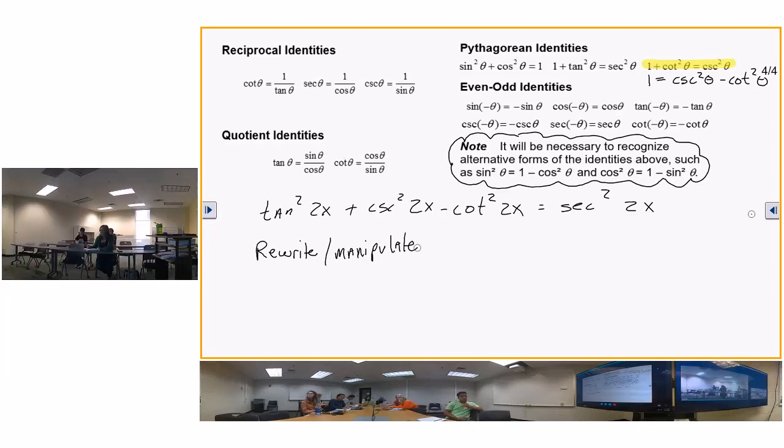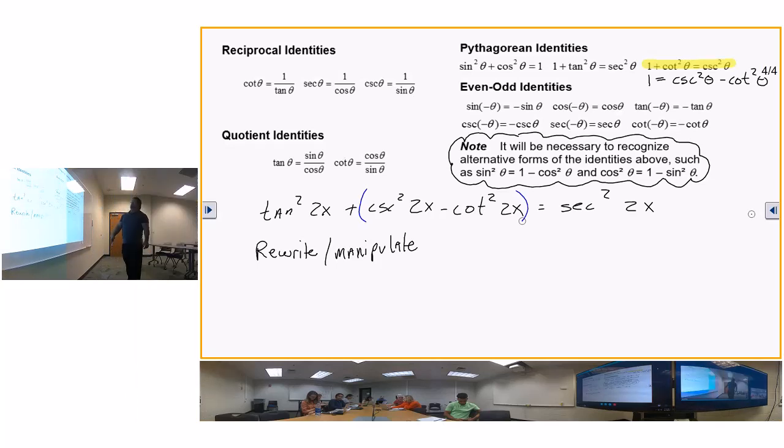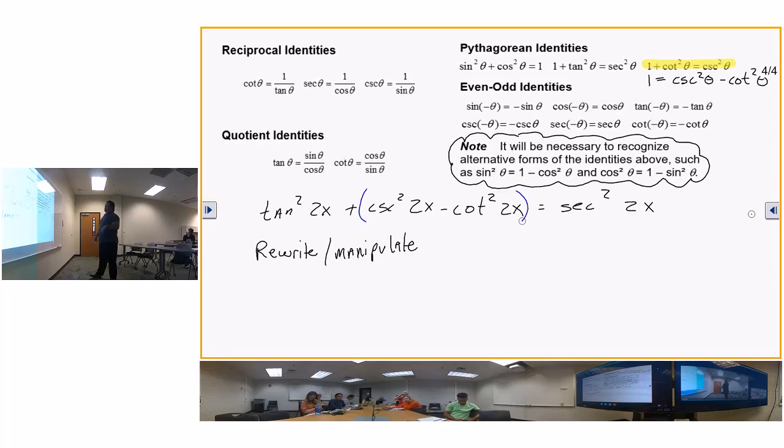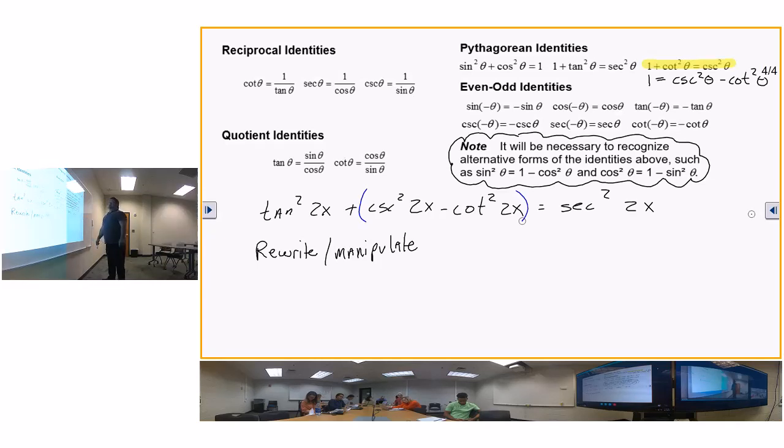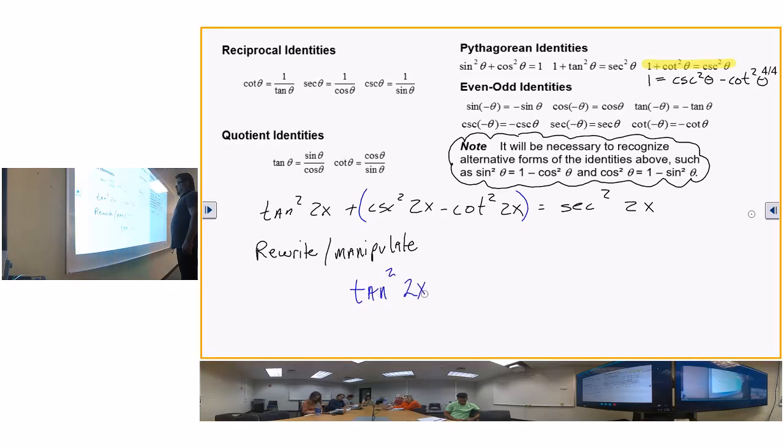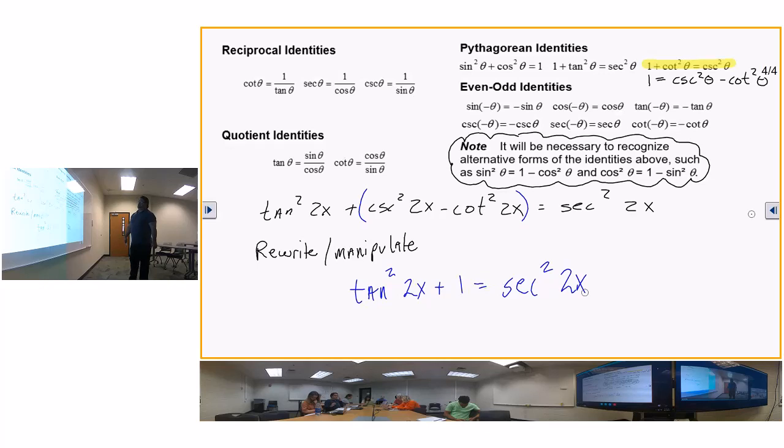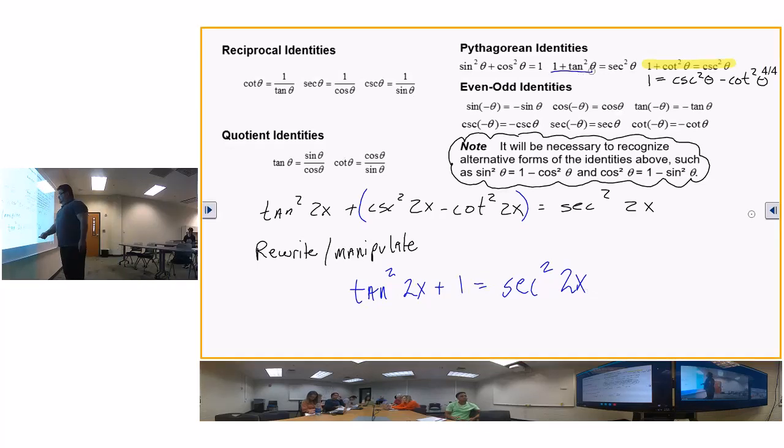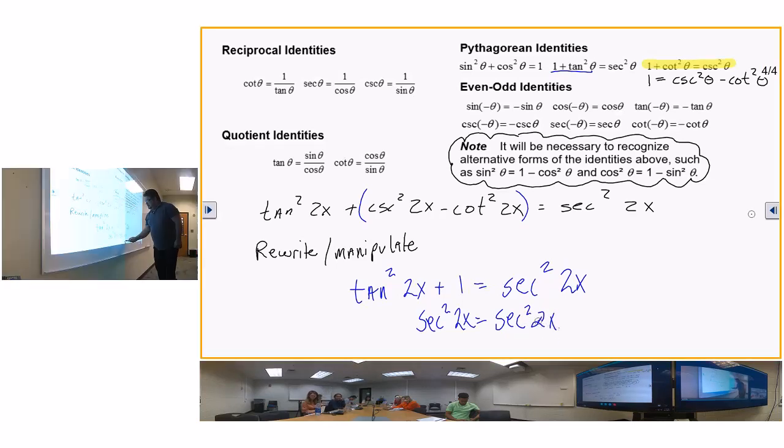There we go, we got a reaction. I knew I'd get a reaction out of that. So rewrite and manipulate. Here is my cosecant squared 2x minus cotangent squared 2x. And the cosecant squared of 2x minus the cotangent squared of 2x is equal to 1. So that's going to be tangent squared of 2x plus 1 is equal to the secant squared of 2x. And what is the tangent squared of 2x plus 1?